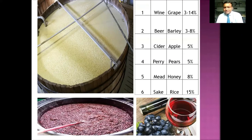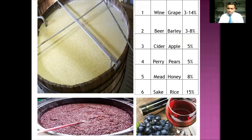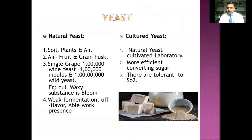From rice, we make sake — a Japanese drink. The rice is cooked, made into a mash or porridge, and yeast is added to convert it into sake. It is essentially rice wine, and it comes from Japan. The maximum alcohol percentage will be around 14 percent.